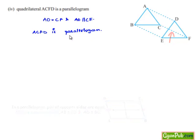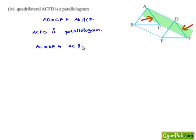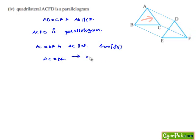Now, as ACFD is a parallelogram, we can say AC is equal to DF and also AC is parallel to DF from the figure. From this we can say that AC is equal to DF, and this is what our fifth proof required.